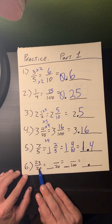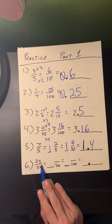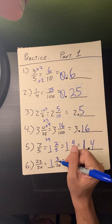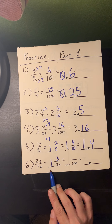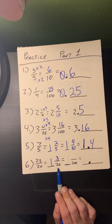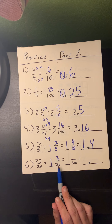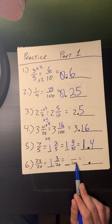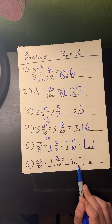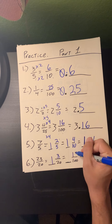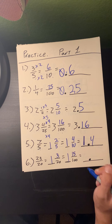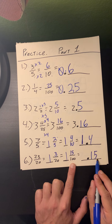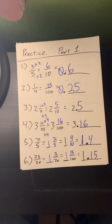Number six: twenty-three twentieths — another improper fraction. Twenty goes into twenty-three one time with a remainder of three, so I have 1 and 3 twentieths. Twenty can reduce to 10, but 3 cannot be divided by 2, so I multiply to get 100. Twenty times 5 equals 100, and 3 times 5 equals 15. I have 1 and 15 hundredths. Because hundredths is my denominator, I plug in my numerator as my decimal: 1.15. That's the end of Part 1.